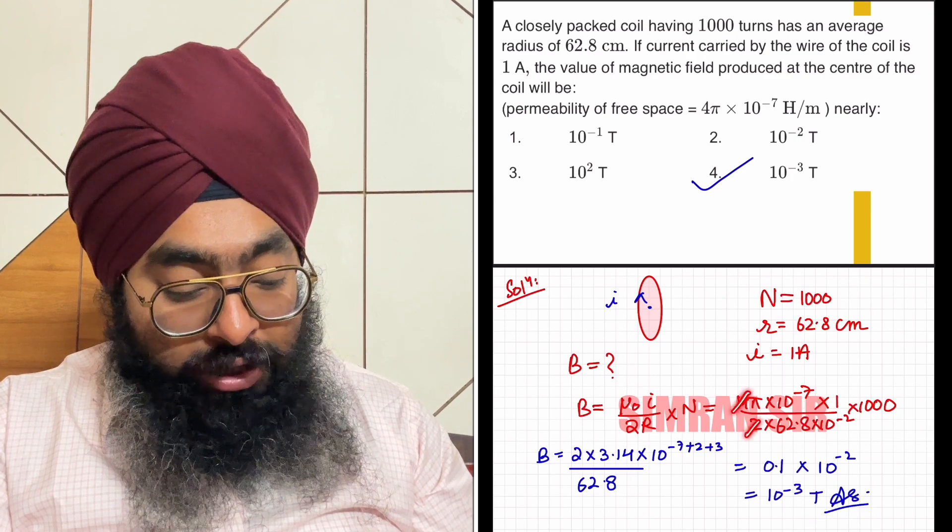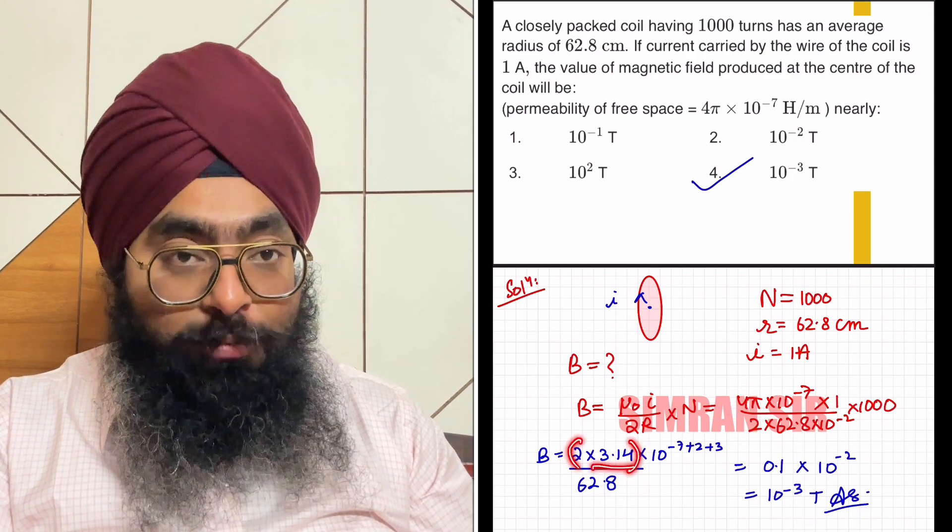Further, when we solve this, 2 and 4 cancel to give 2 on top, so 2π. The value of π is 3.14.